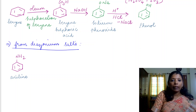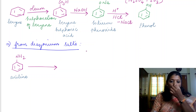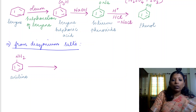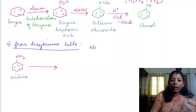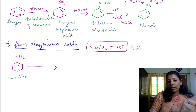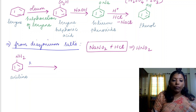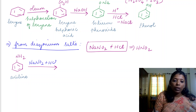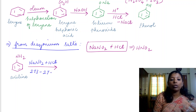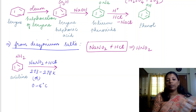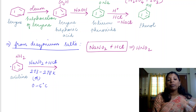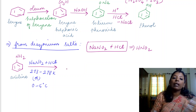Aniline is treated with nitrous acid. Usually we cannot get nitrous acid directly, so we add sodium nitrite (NaNO2) and HCl — this combination produces nitrous acid. This reaction takes place at 273 to 278 Kelvin, or 0 to 5 degrees Celsius. When aniline is treated with nitrous acid, we get a diazonium salt.